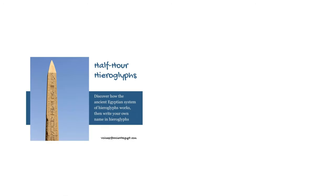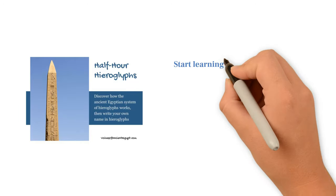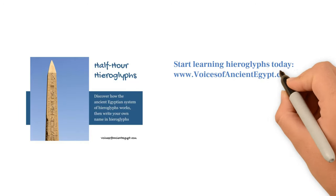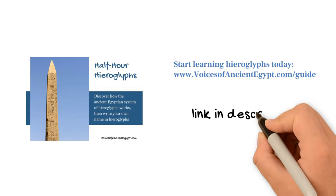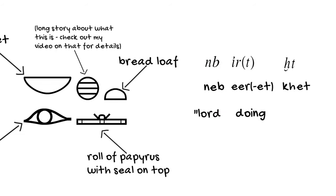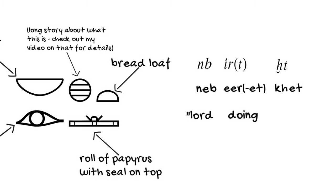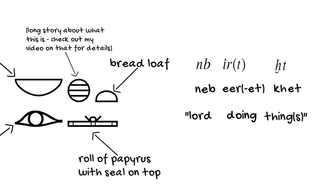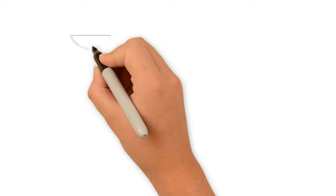And if you're not familiar with what a determinative is, I recommend you pick up my free half-hour hieroglyphs guide, which you can pick up at voicesofancientegypt.com/guide. So putting these signs together, it spells out the word thing or things.